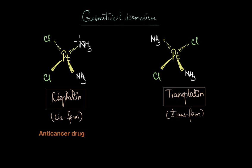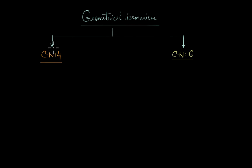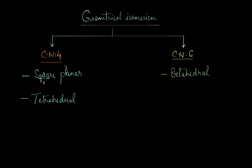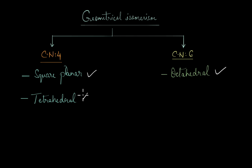Clearly, the arrangement of ligands around a central metal ion can have a significant impact on its behavior. When it comes to coordination compounds, geometrical isomerism is most relevant in compounds with coordination number 4 and coordination number 6. In coordination number 4, complexes can exist in square planar or tetrahedral geometries, and in coordination number 6, complexes exist in octahedral geometry. However, only square planar and octahedral complexes exhibit geometrical isomerism, not tetrahedral.